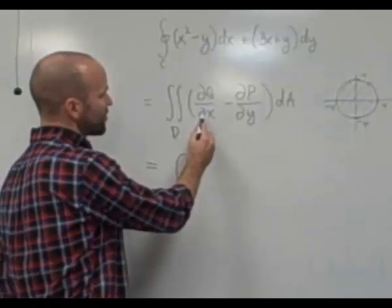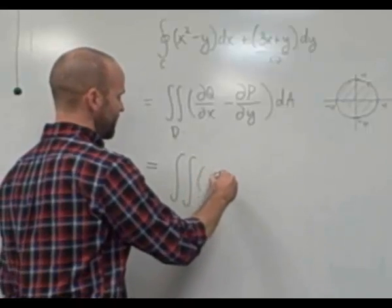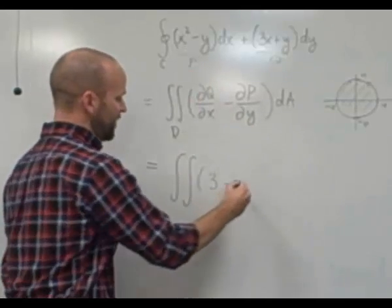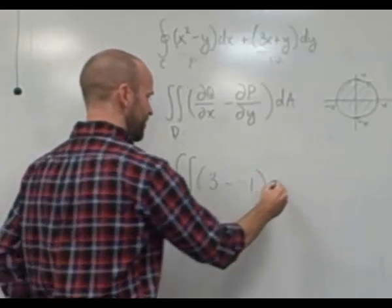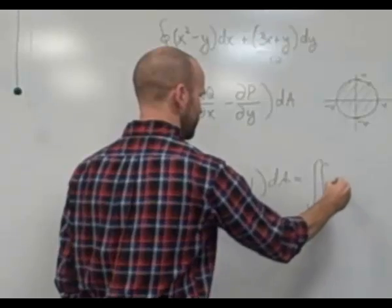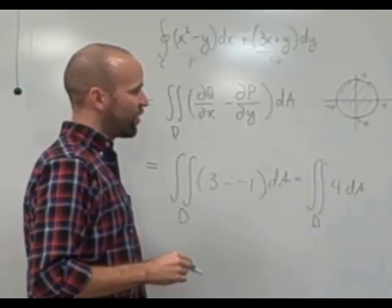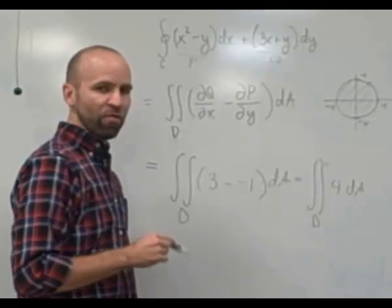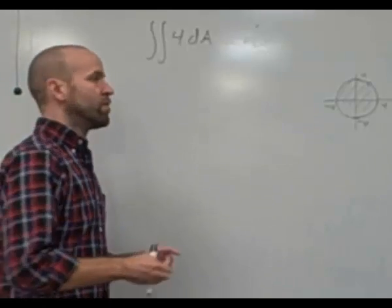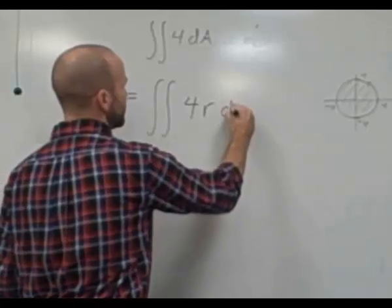The partial derivative of Q with respect to x — here's Q — is just 3. And here is P; the partial derivative of P with respect to y is −1. So all I have is the double integral of 4 with respect to the area of region D. Because region D is inside a circle, it simplifies things to convert to polar coordinates. In polar coordinates we have an extra factor of r, so this becomes the integral of 4r dr dθ.